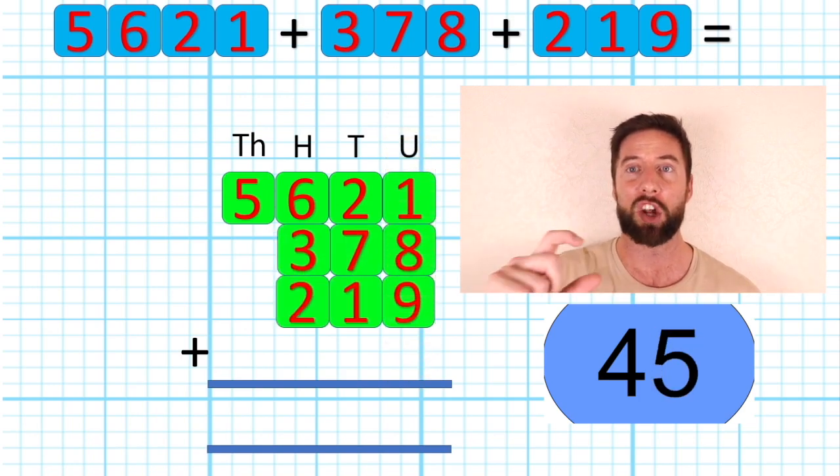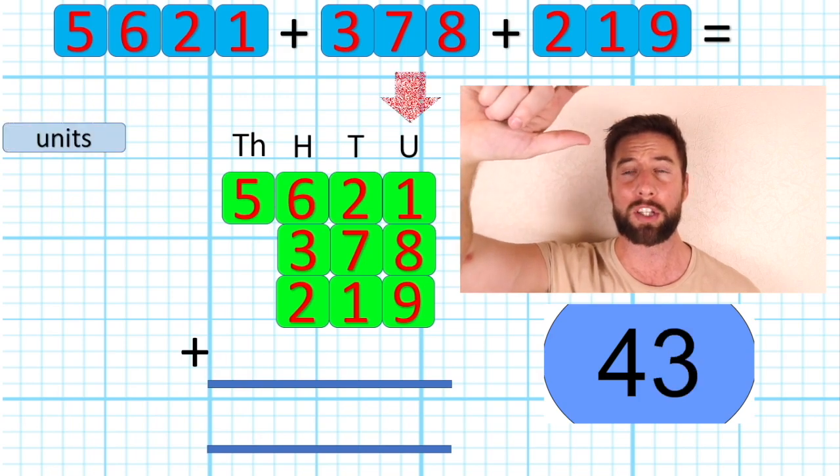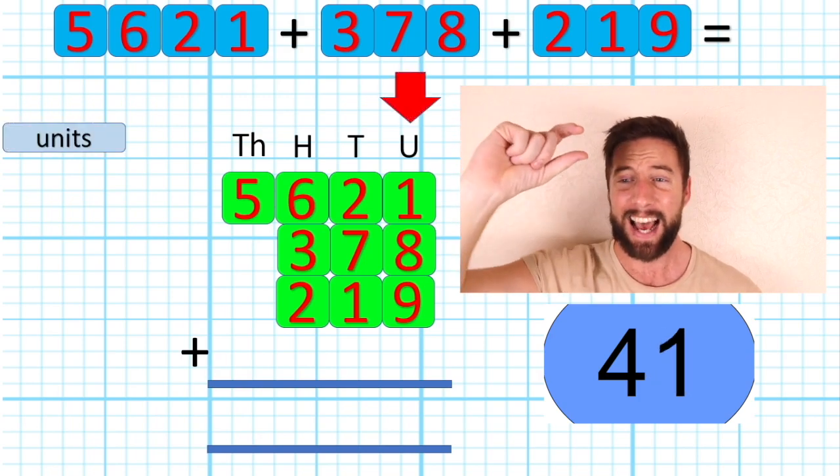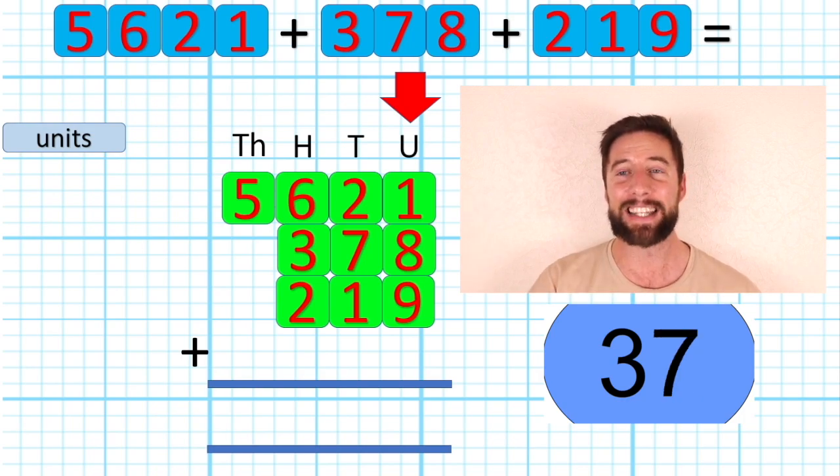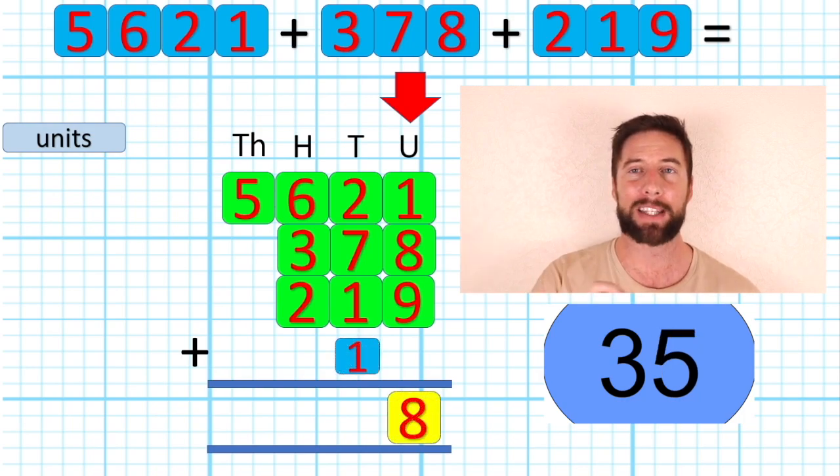Okay, so now we've done that we can start adding up. We're going to start with our units, start with our smallest value. Here we go. 1, 8, add 9 equals 18, which is a 10 and an 8. I'm going to put my 8 in place and carry my 10 into my next column.